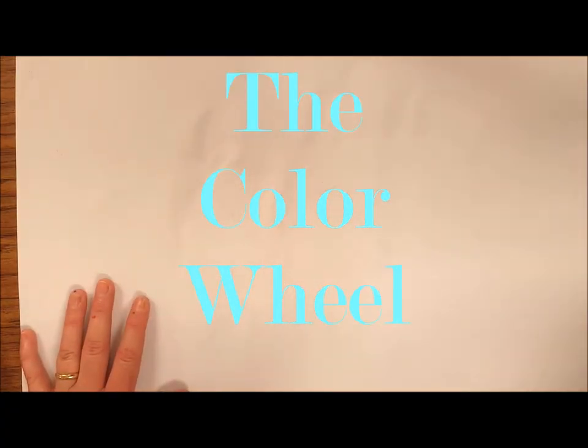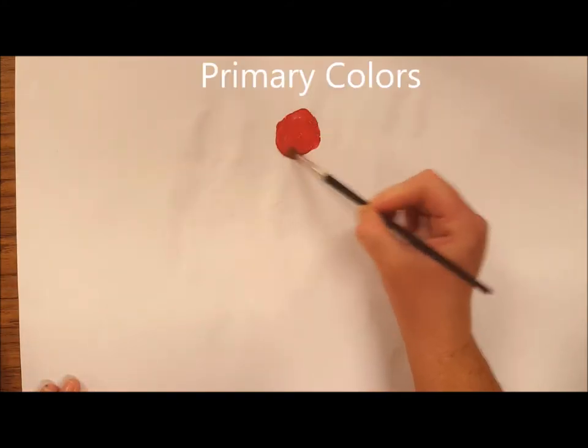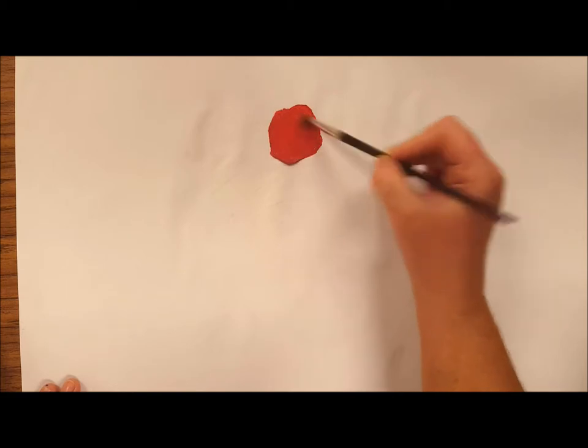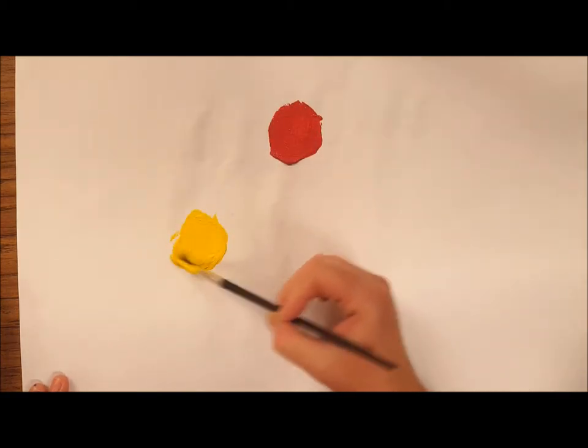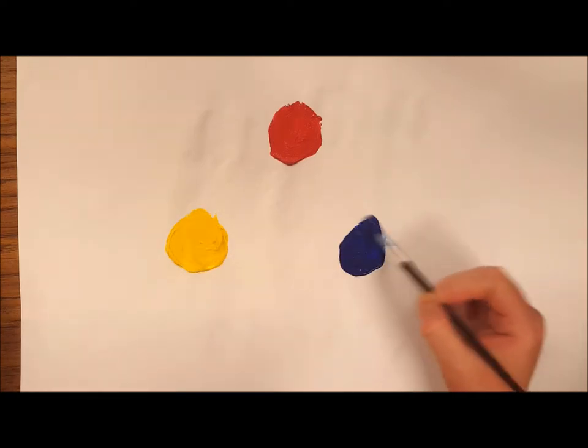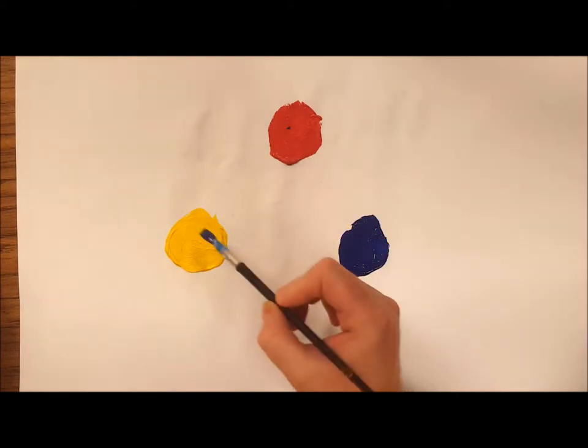Let's make a color wheel. First we start with our primary colors, which are red, yellow, and blue. Notice that I put my three primary colors in a triangle.